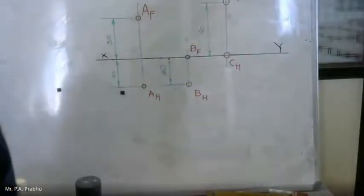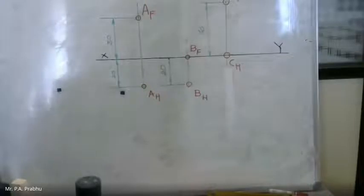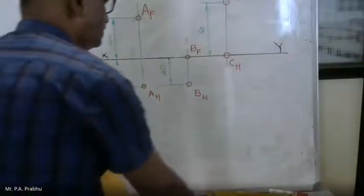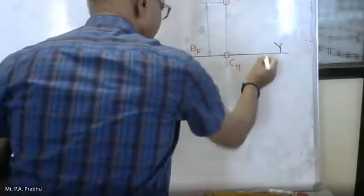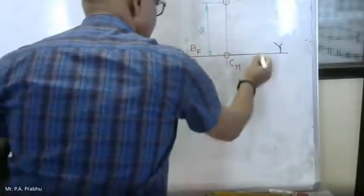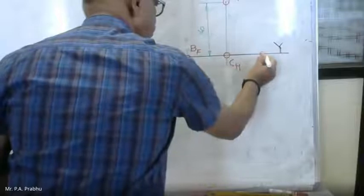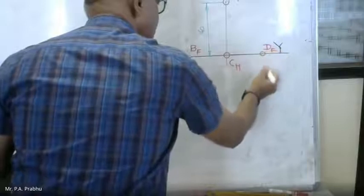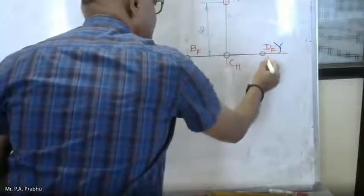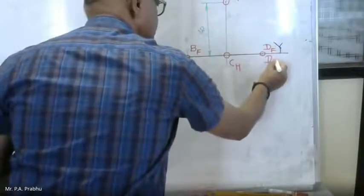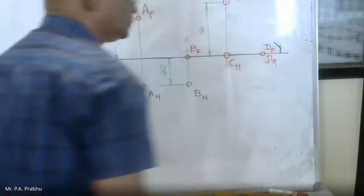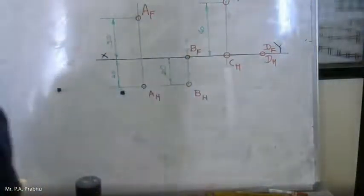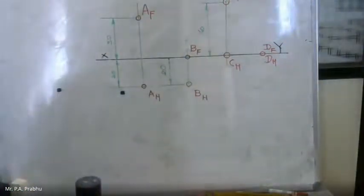Fourth case: point D lies on both planes. So this point lies on the reference line itself — mark one point on the reference line. There will be a front view there. This is the projection of a point when the point is in the first quadrant.